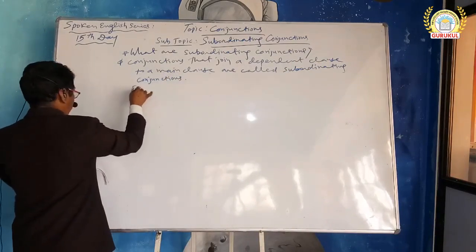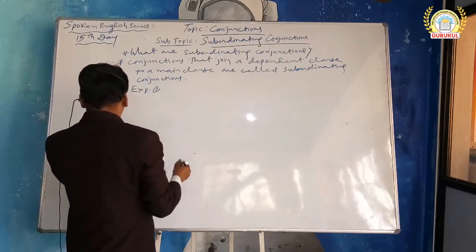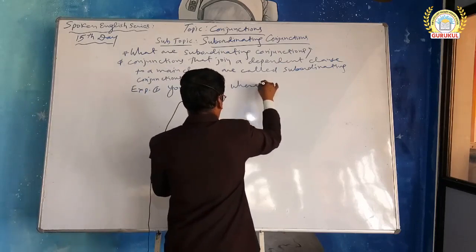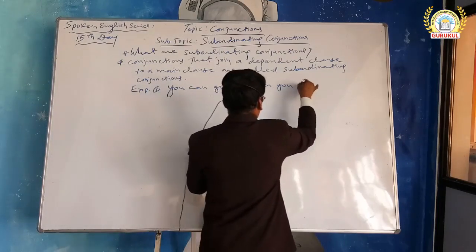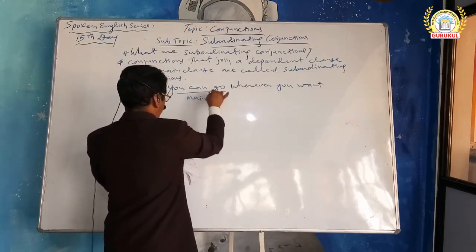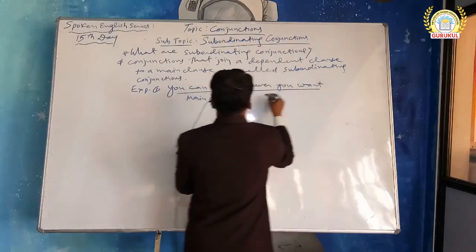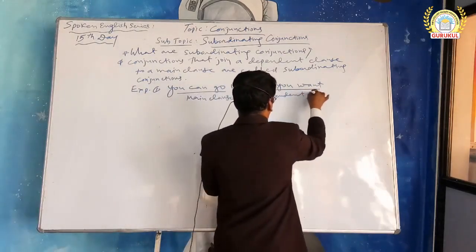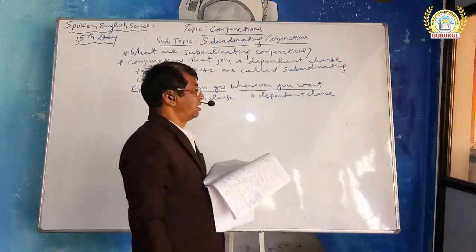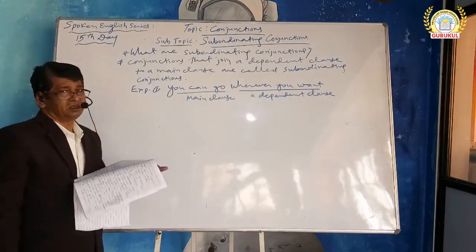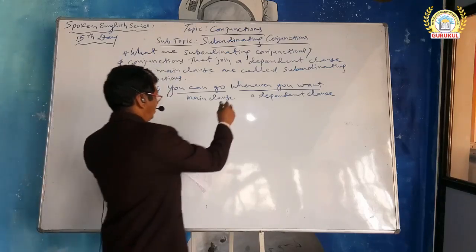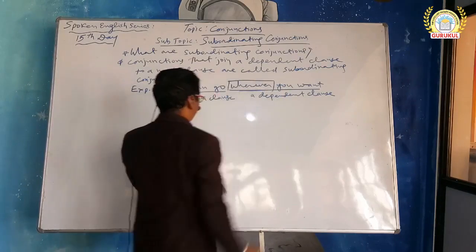Conjunctions that join a dependent clause to a main clause are called subordinating conjunctions. For example: 'You can go wherever you want.' Here, 'you can go' is the main clause, and 'wherever you want' is the dependent clause. The main clause can give a complete sense, while the dependent clause depends on the main clause. A clause is a group of words having a subject and predicate. The word 'wherever' here is a conjunction connecting the dependent clause to the main clause.